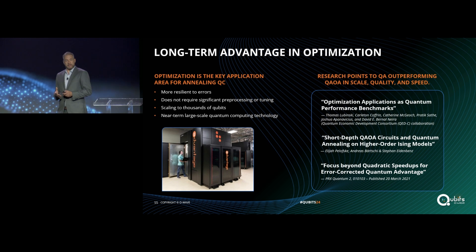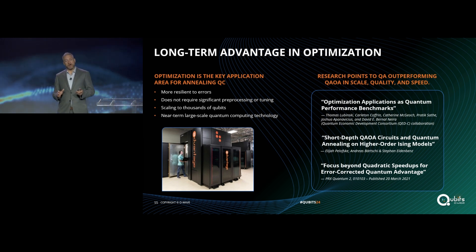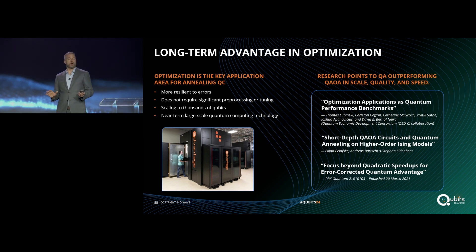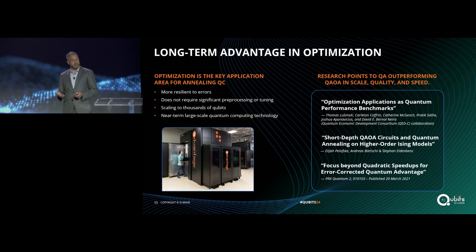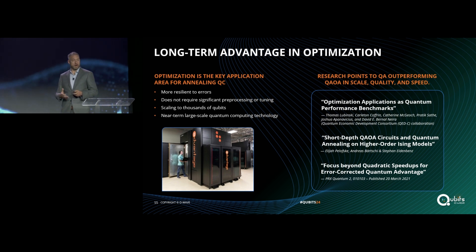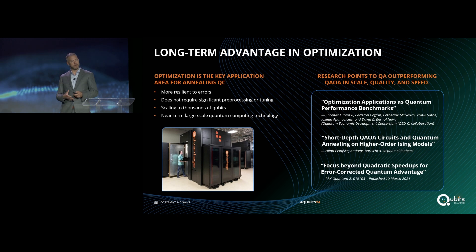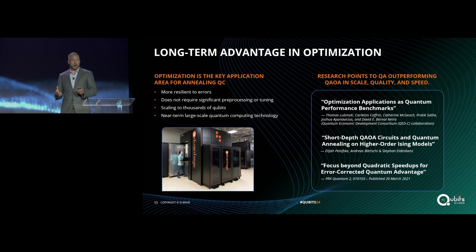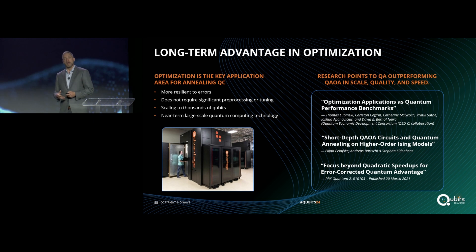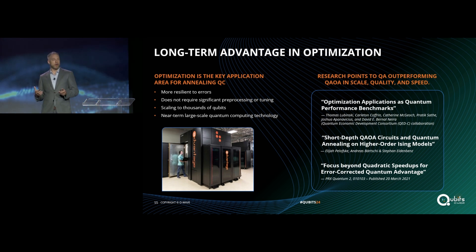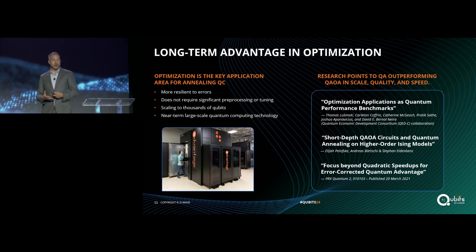What we're finding is annealing algorithms do not require significant pre-processing or tuning. My colleague Kathy McGoo will give you some benchmarking data showing empirically that you get remarkably stable performance across our range of parameters. This is in stark contrast to variational algorithms like the quantum approximate optimization algorithm used by gate model systems for solving optimization problems, where there is substantial tuning required.